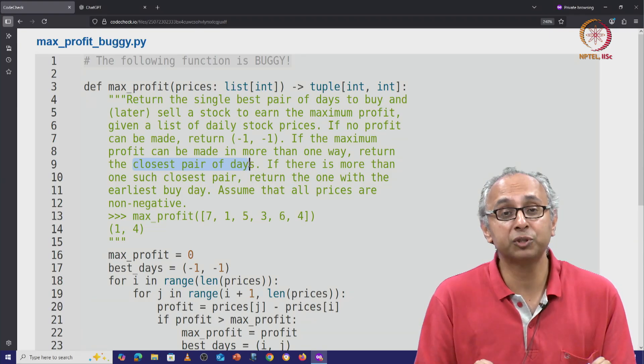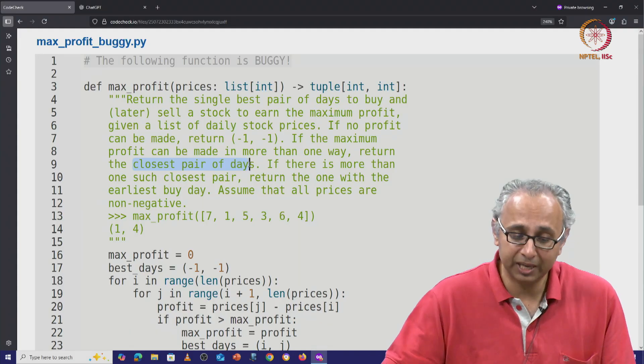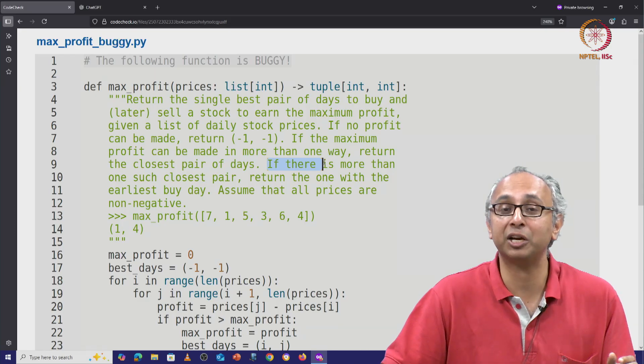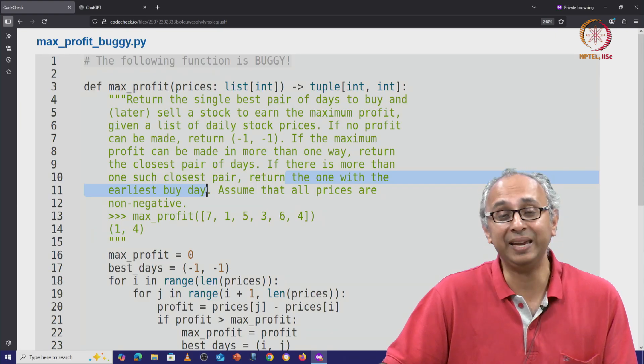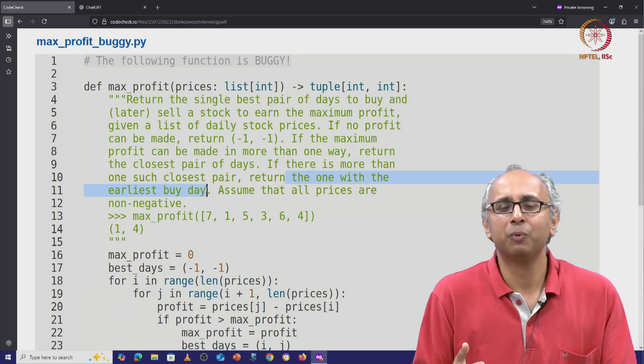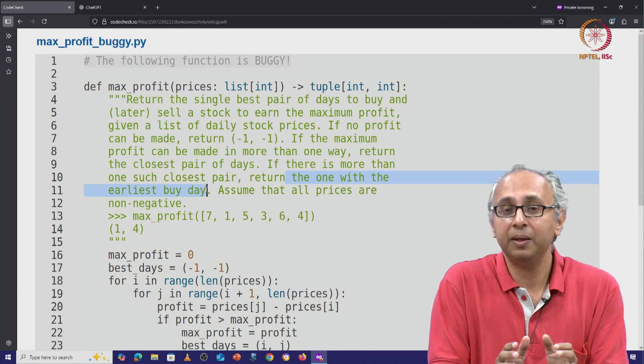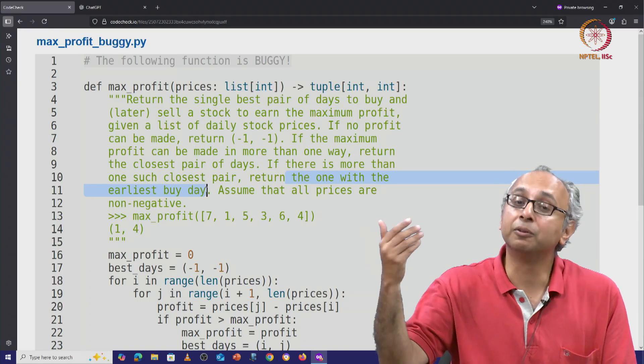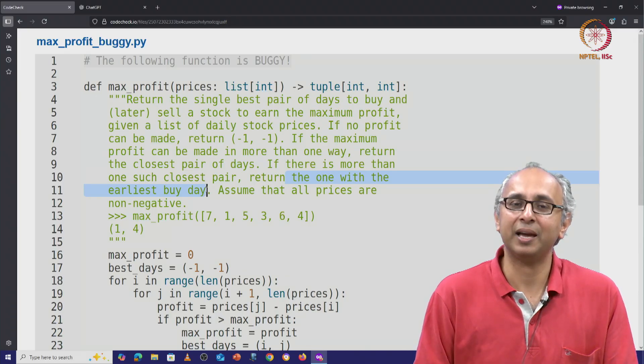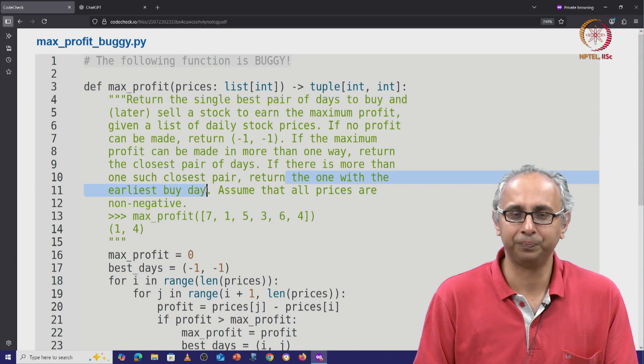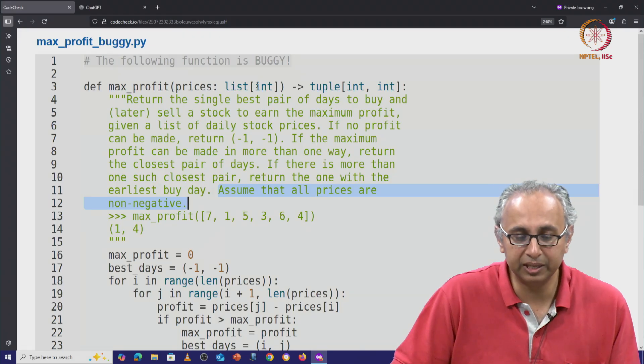And even if we are interested in the closest such pair of days, that same closeness might happen multiple times. So the doc string goes on to say if there is more than one such closest pair, then we want to return the one with the earliest buy day. Again the intuition is, well if there is a way to earn this profit by committing your resources for a few days here, and then again you can earn that same profit in the future, let's try and get that profit early. Let's put that profit in our bank account as early as we can. Finally, the doc string reminds us that these have to be non-negative prices. And again this is a list of integers.